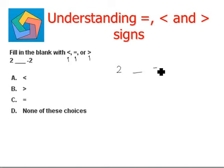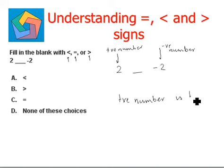Now here we see we are given a positive number, while this is a negative number. We know that a positive number is always bigger than a negative number.